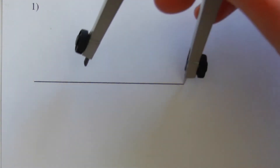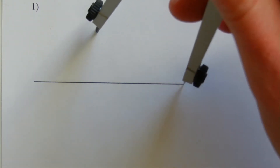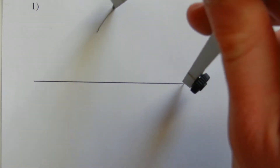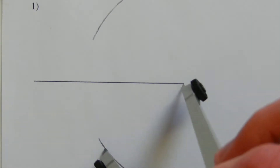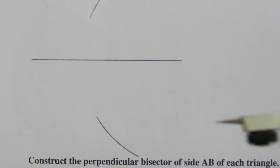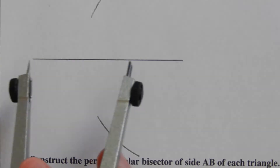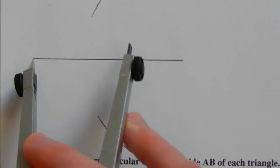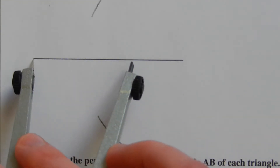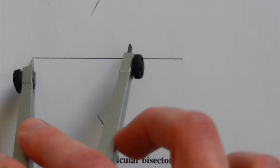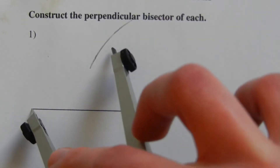We're going to extend the tick mark above that line and then extend a mark or arc below the line. Now we're going to do the same from the other endpoint of our given line, keeping that same exact measurement on our compass.